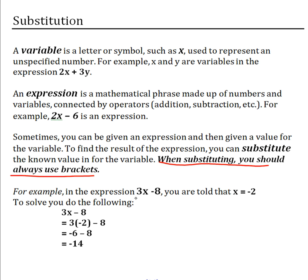Here's an example. In the expression 3x minus 8, you were told that x equals negative 2. To solve, what you do is you replace the x with negative 2 using a bracket, and then you just follow BEDMAS. You multiply, and then you add or subtract, and you get your answer.